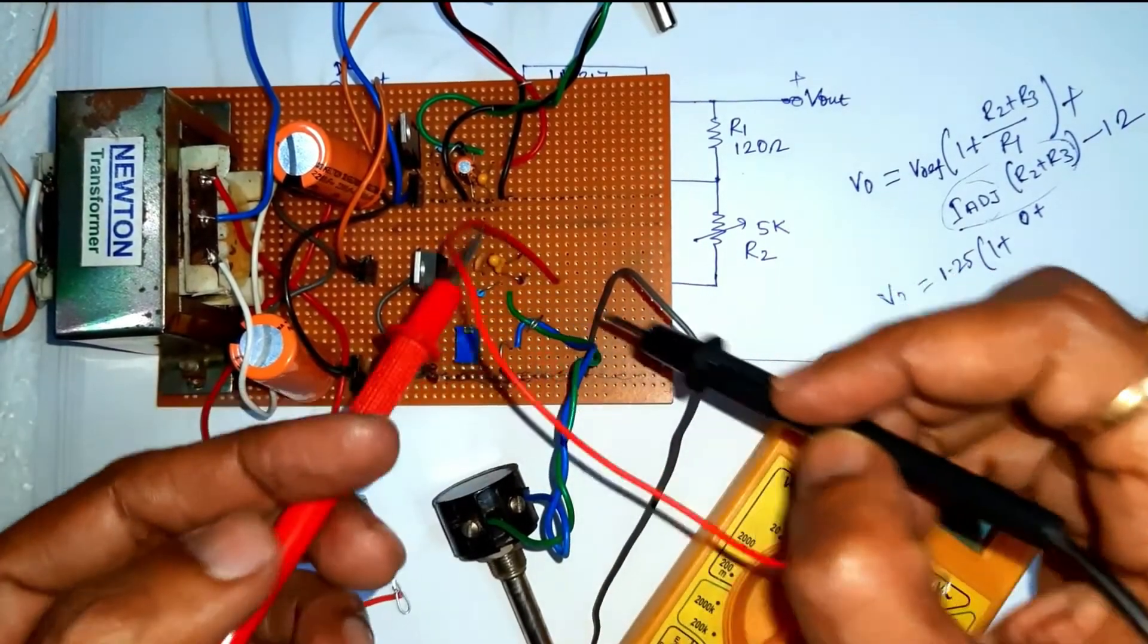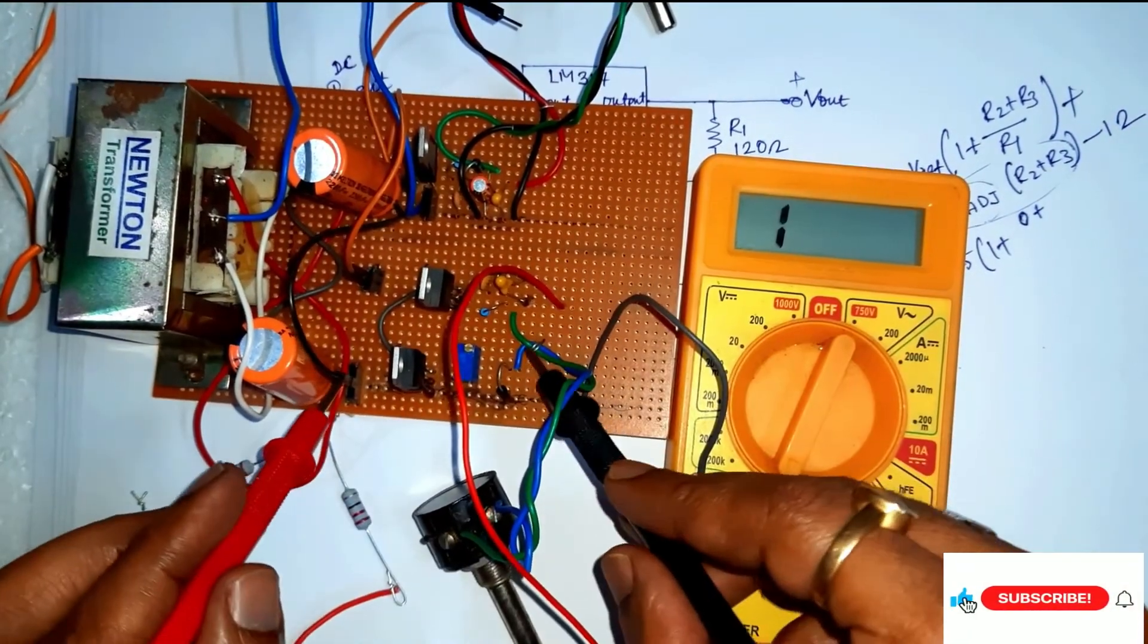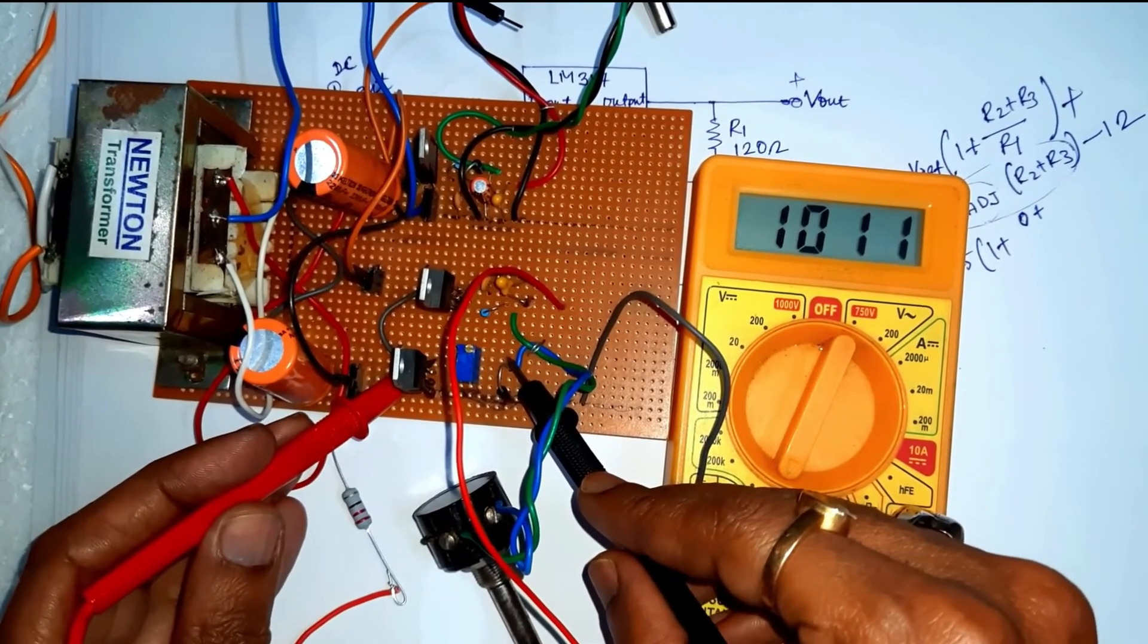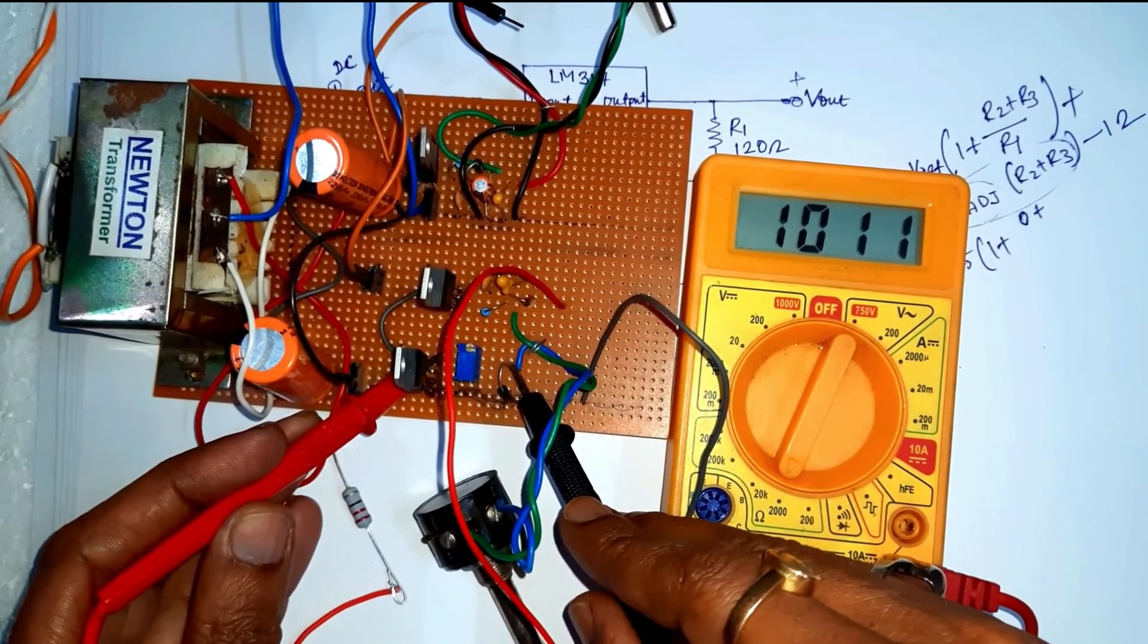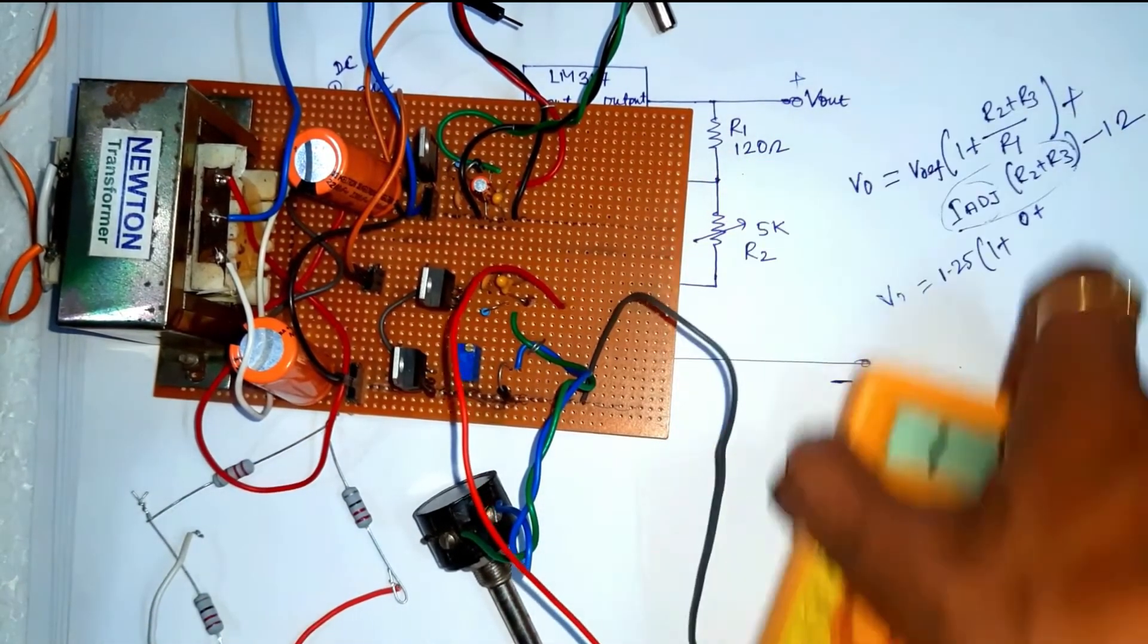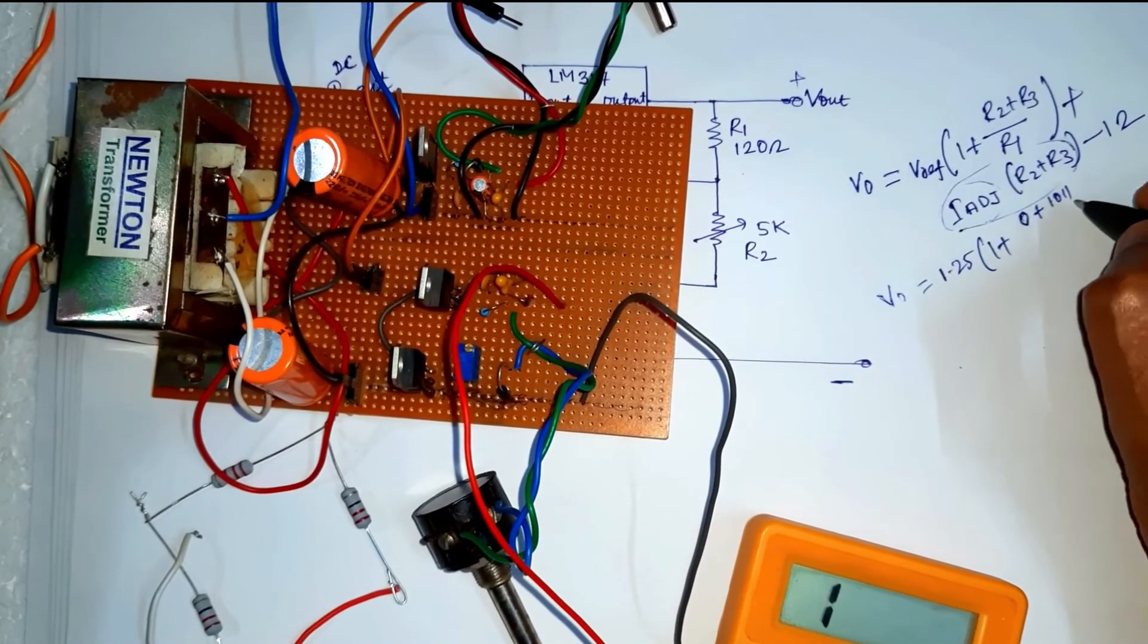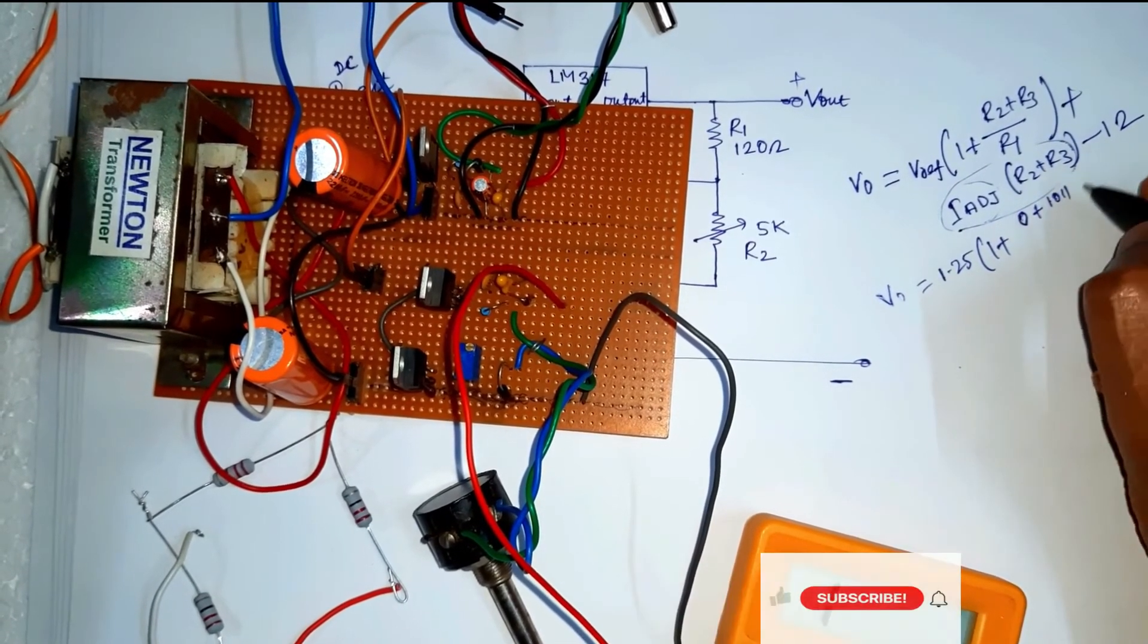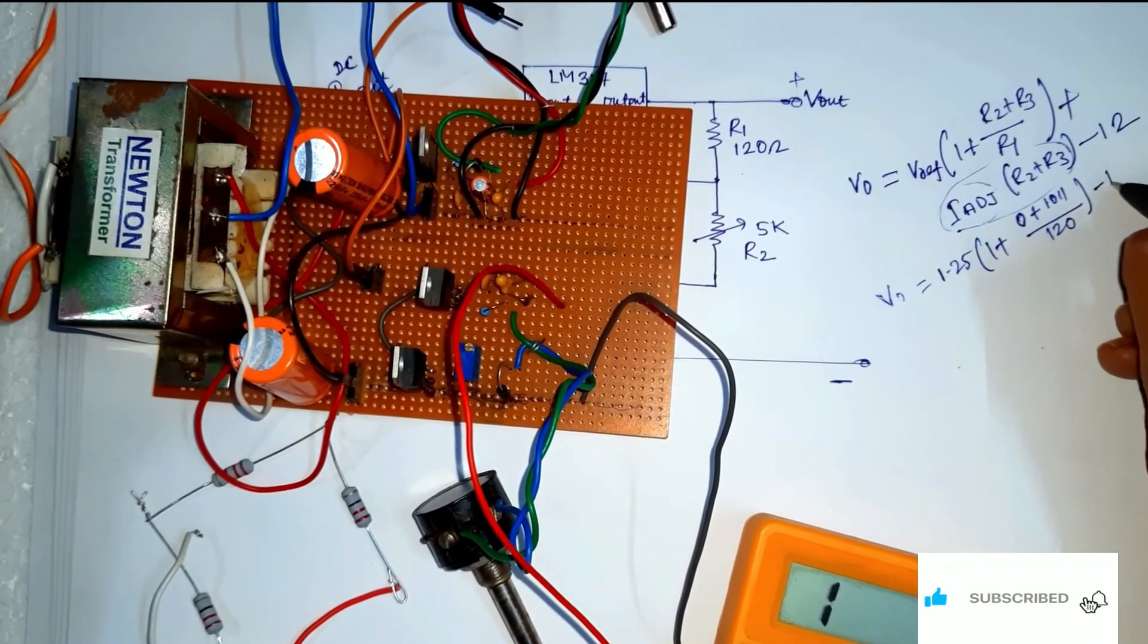Just we measure the value of the R3 between these two terminals. And this is the R3 that is 1.11, near about 1.01k, by R1 120 minus 12 volt.